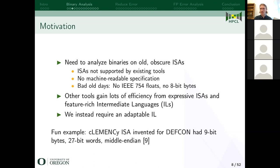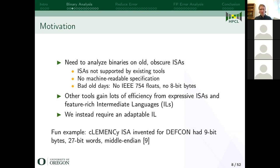These ISAs are not supported by existing tools, and there's no machine-readable specification — that notion has only come about pretty recently. Dealing with old ISAs meant dealing with the early days of computing where many things weren't standardized: a byte was not necessarily eight bits, and there was no single standard floating point — multiple representations existed, so interoperability was a big concern. Existing tools gain efficiency from expressive ISAs and feature-rich intermediate languages that assume a byte is eight bits. Instead, we need something more adaptable that can handle basically any weird architecture.